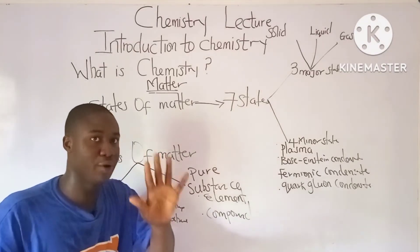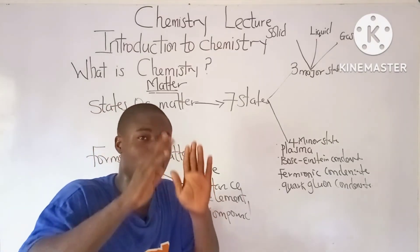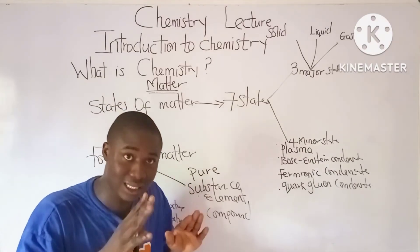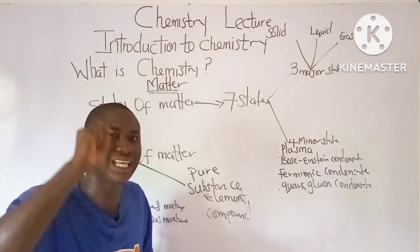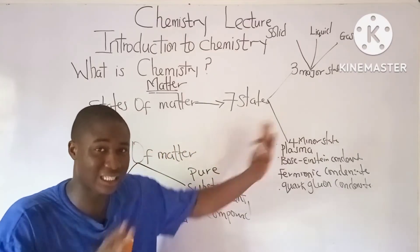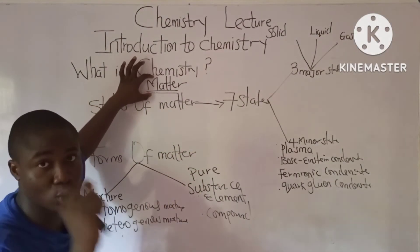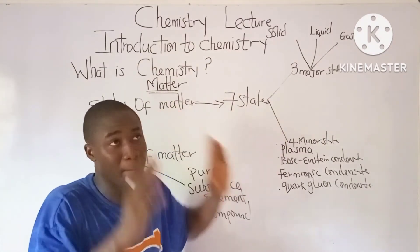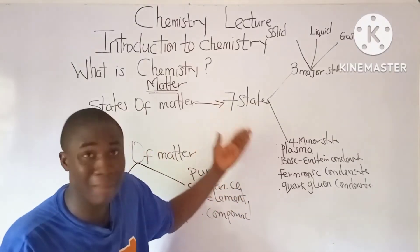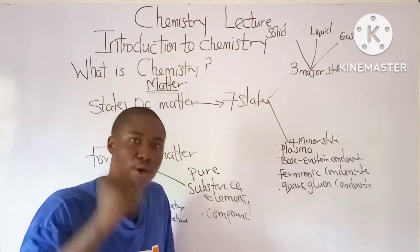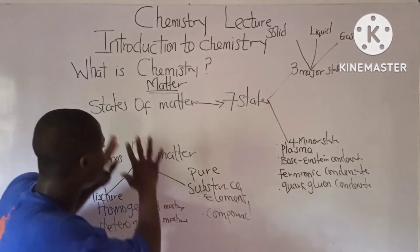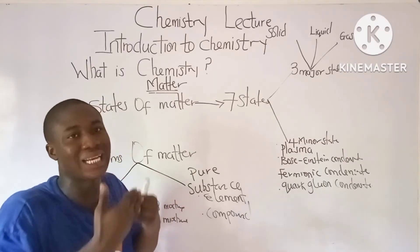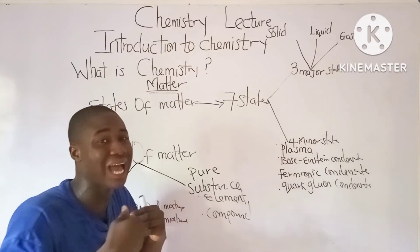To summarize: chemistry is the study of the composition, properties, uses, and structure of matter. Matter is anything that has mass and occupies space, or anything that has density. We have seven states of matter — three major states (solid, liquid, gas) and four minor states (plasma, Bose-Einstein condensate, fermionic condensate, and quark-gluon condensate). Forms of matter are divided into mixtures and pure substances; mixtures are homogeneous or heterogeneous, and pure substances are elements or compounds.